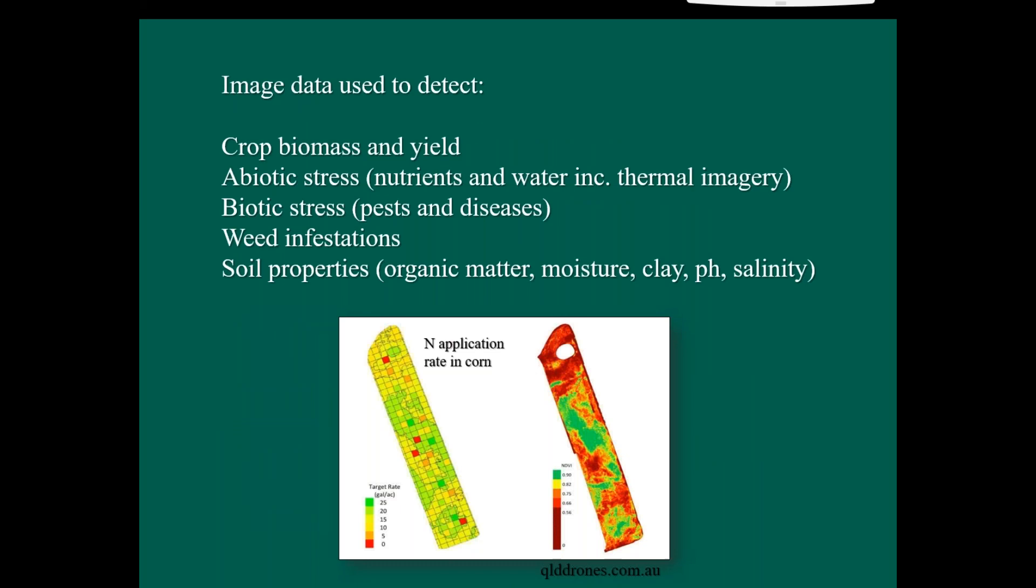So the image data itself is really being used to detect something. In this case, it would be crop biomass is probably the biggest application, but there's an enormous amount of research at the moment looking into particular stresses in crop plants, whether it's abiotic with nutrients and water, including thermal imagery, which is referring to infrared sensors, which is really handy for targeting irrigation and that sort of thing. And also biotic stresses to see if we can detect pests and diseases and see if there's actually specific spectral signatures associated with those that we can use. And certainly image data is being used to detect weed infestations and also various soil properties.